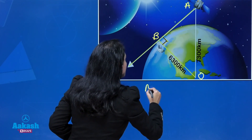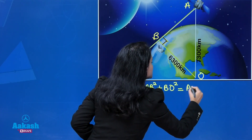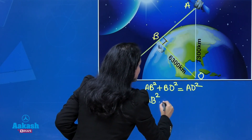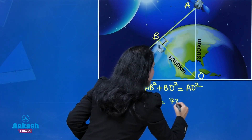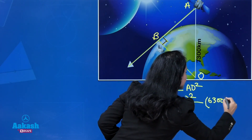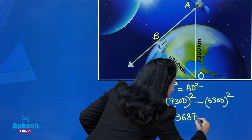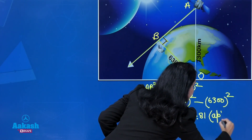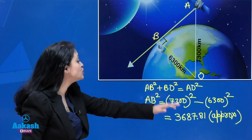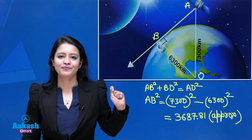In triangle ABO, we apply Pythagoras theorem: AB² + BO² = AO². So AB² = AO² − BO² = 7300² − 6300². The answer is approximately 3687.81 kilometers. That means the signal from the satellite has to cover a distance of approximately 3687.81 kilometers to reach the control center.